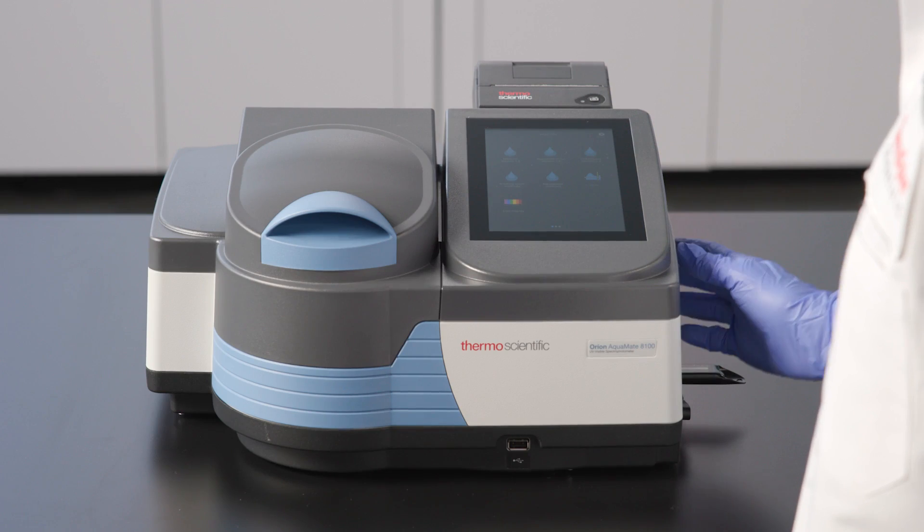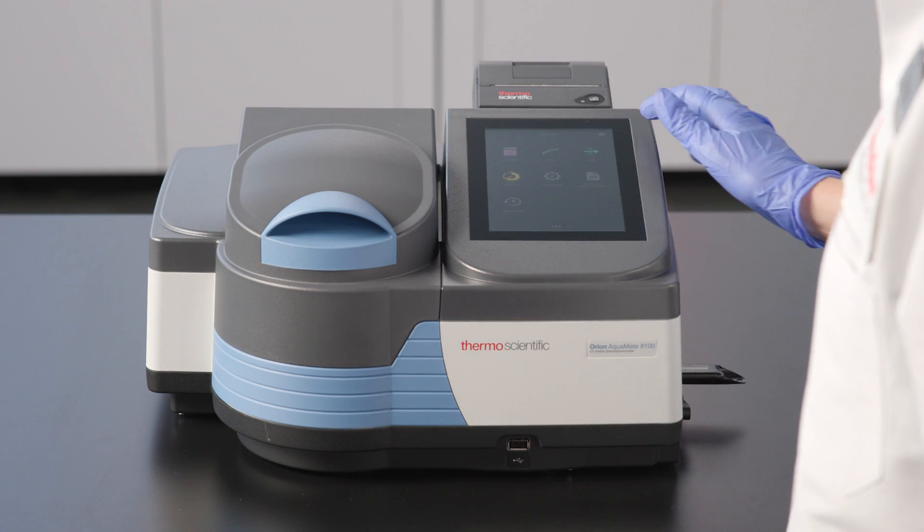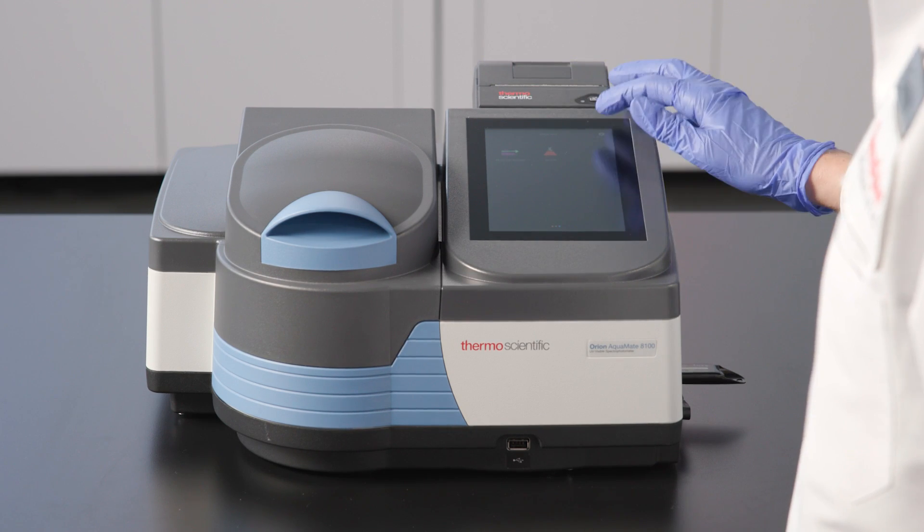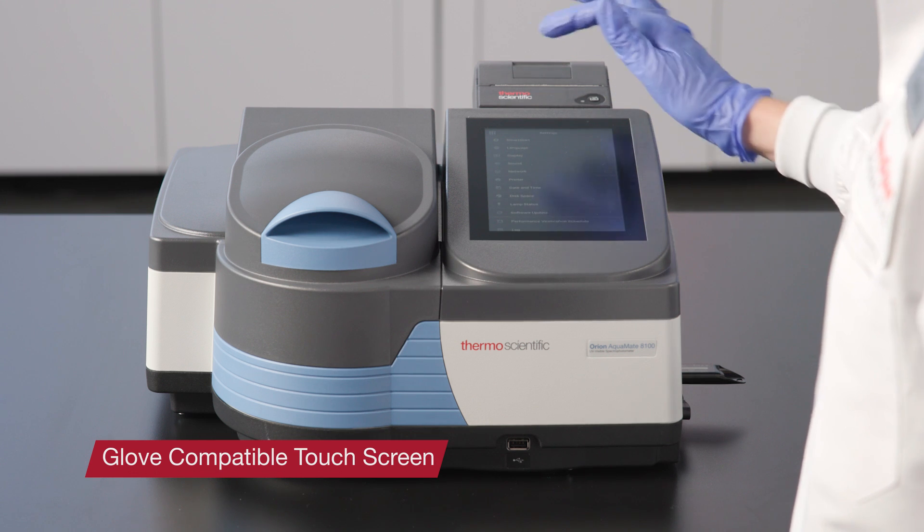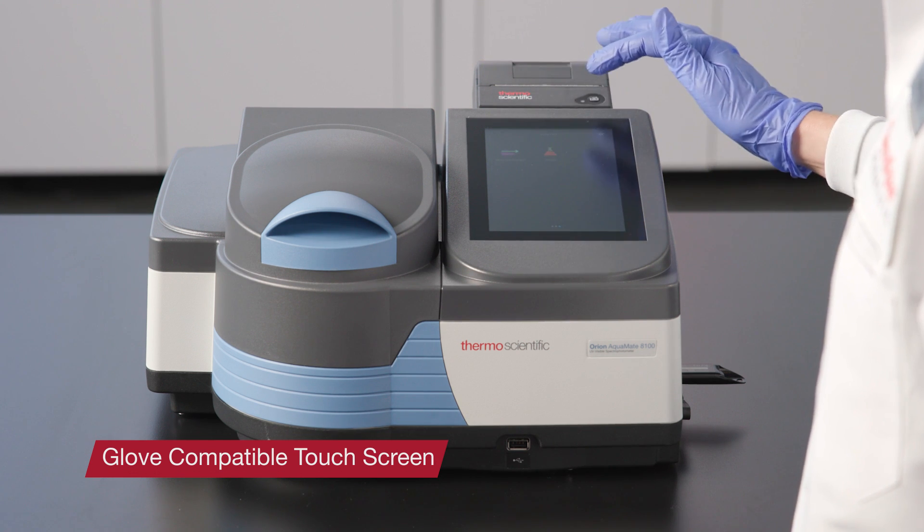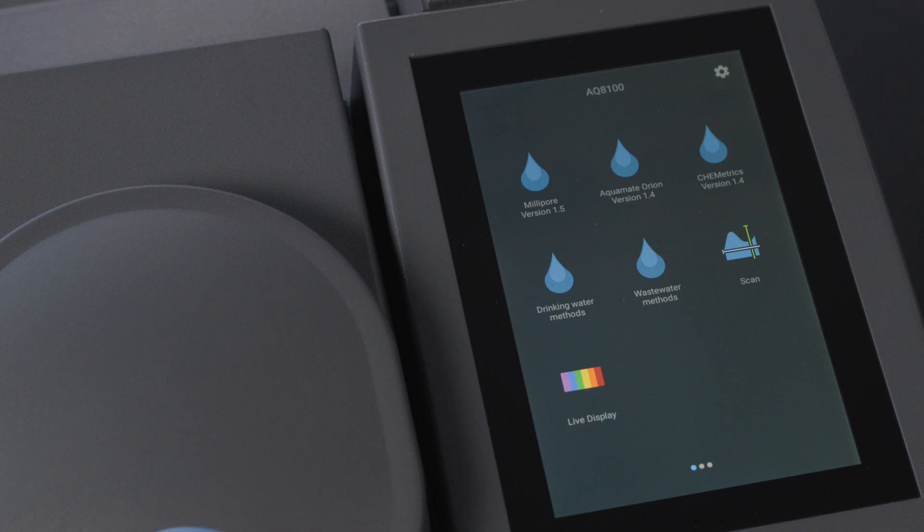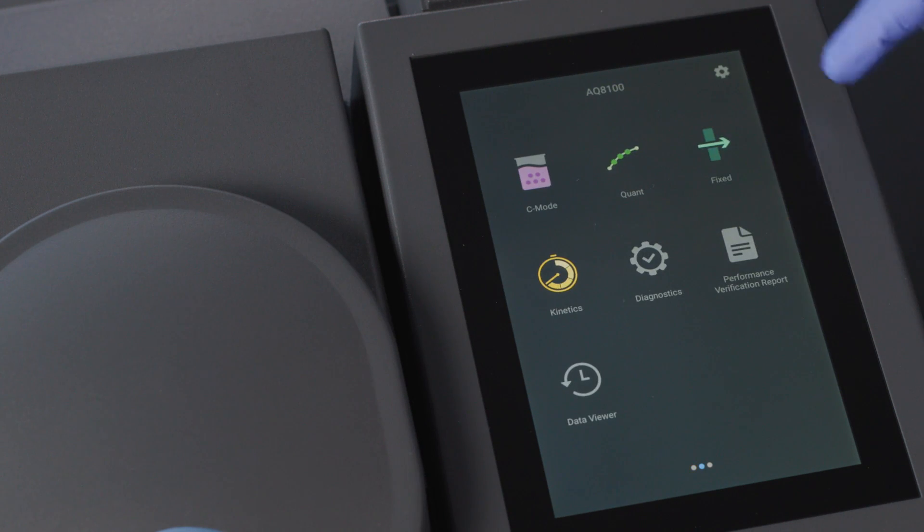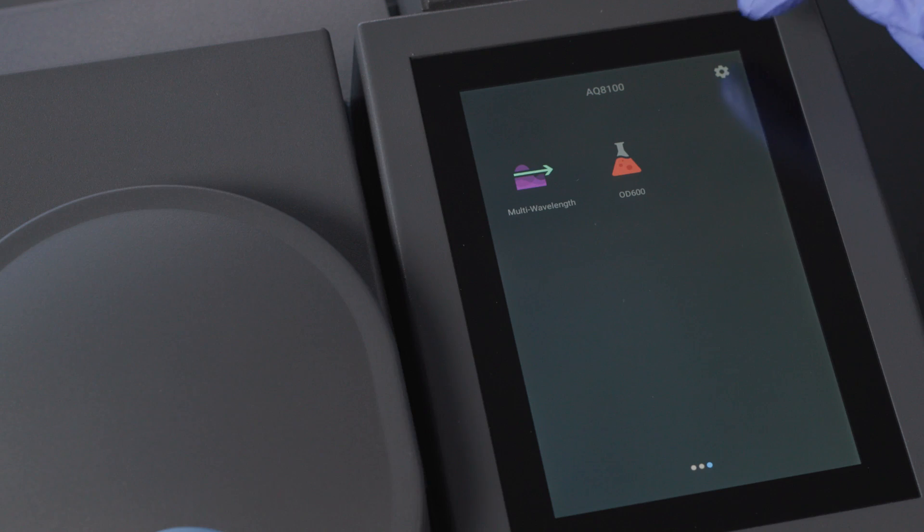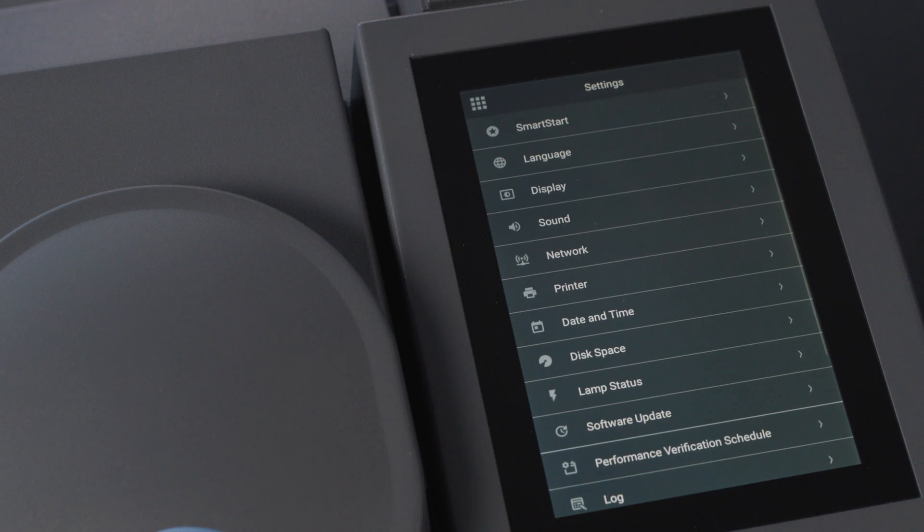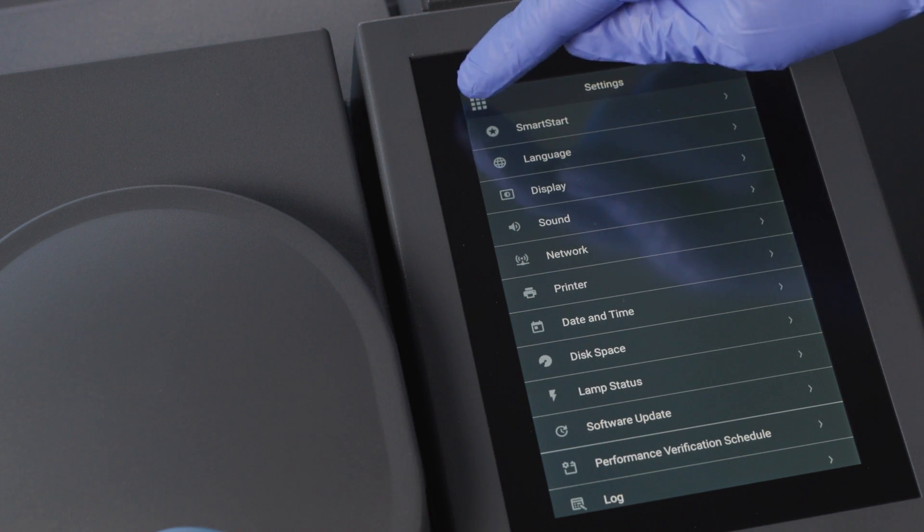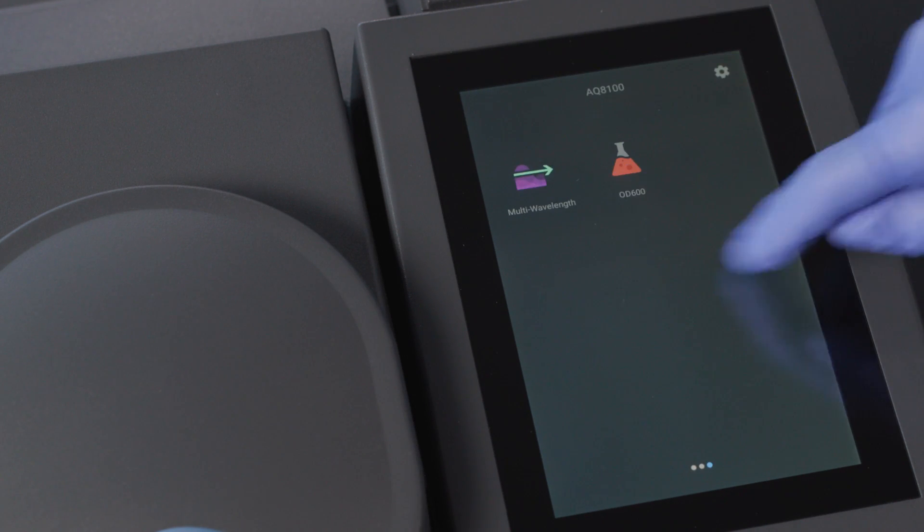One of the features we immediately notice when using Aquamate spectrophotometers is the glove-compatible touchscreen. This makes the instrument much easier to navigate and use than the previous model. The touchscreen has the same functionality that we are accustomed to with a smartphone or a tablet. There is a settings gear icon for accessing the instrument settings and a familiar icon to go back to the home screen.